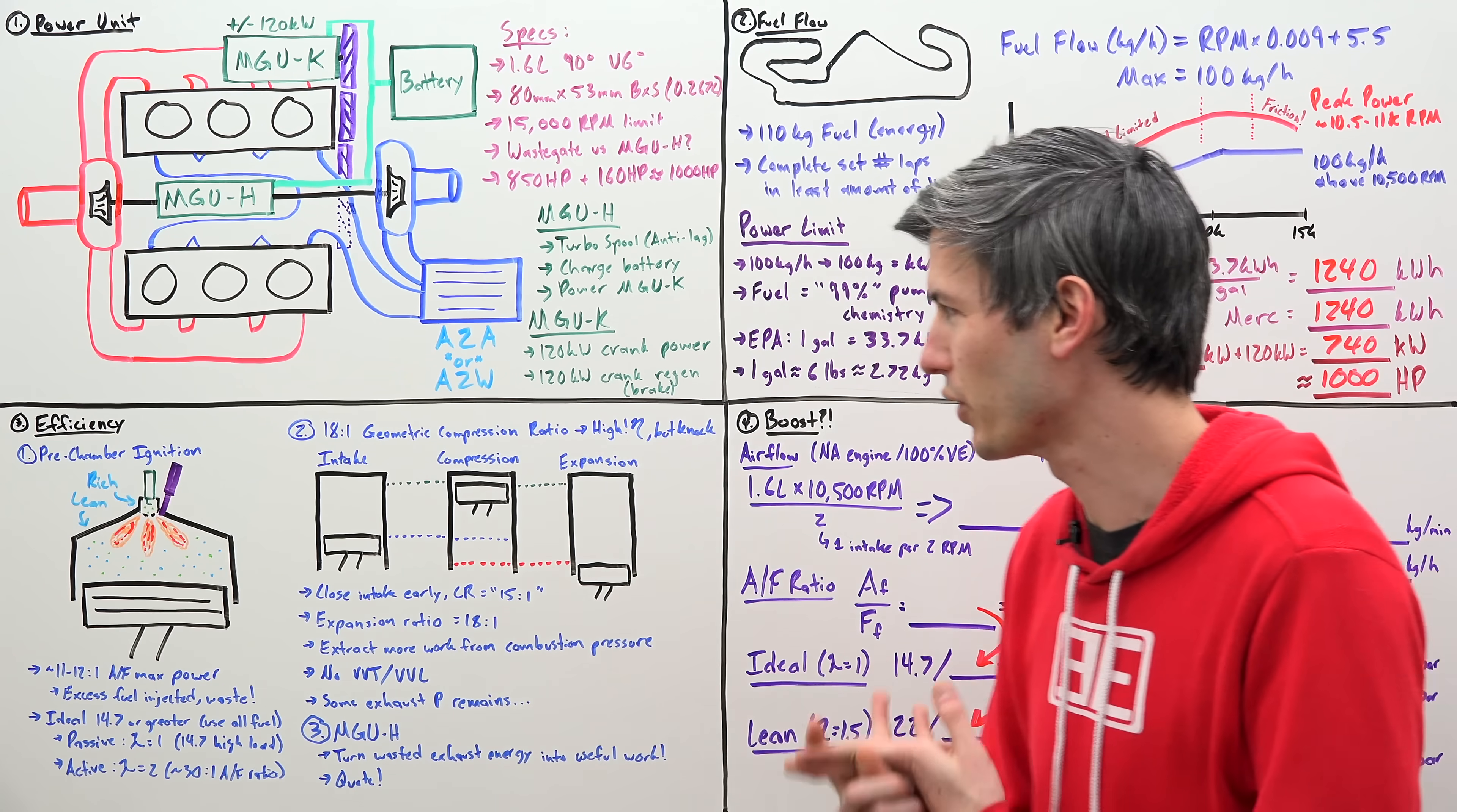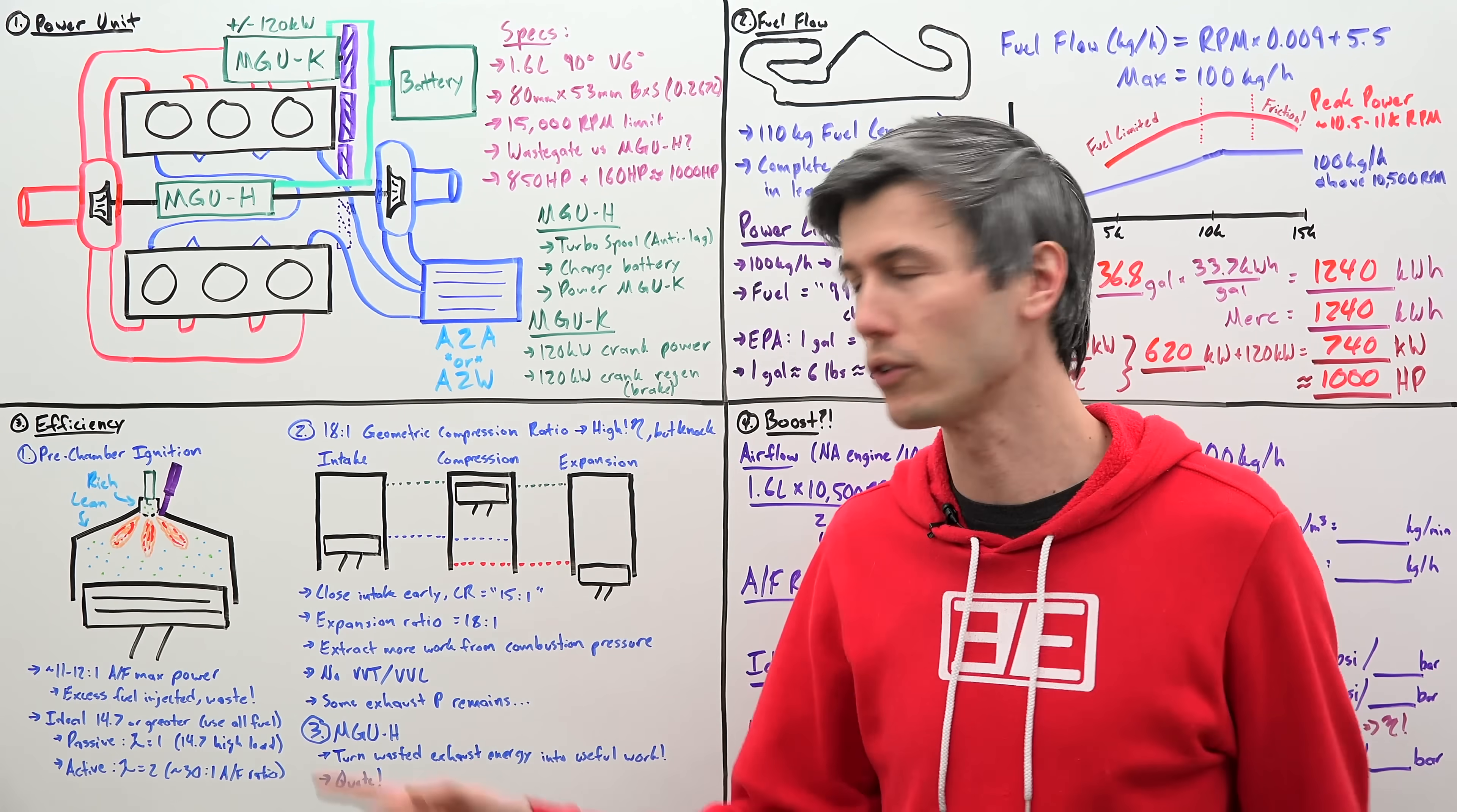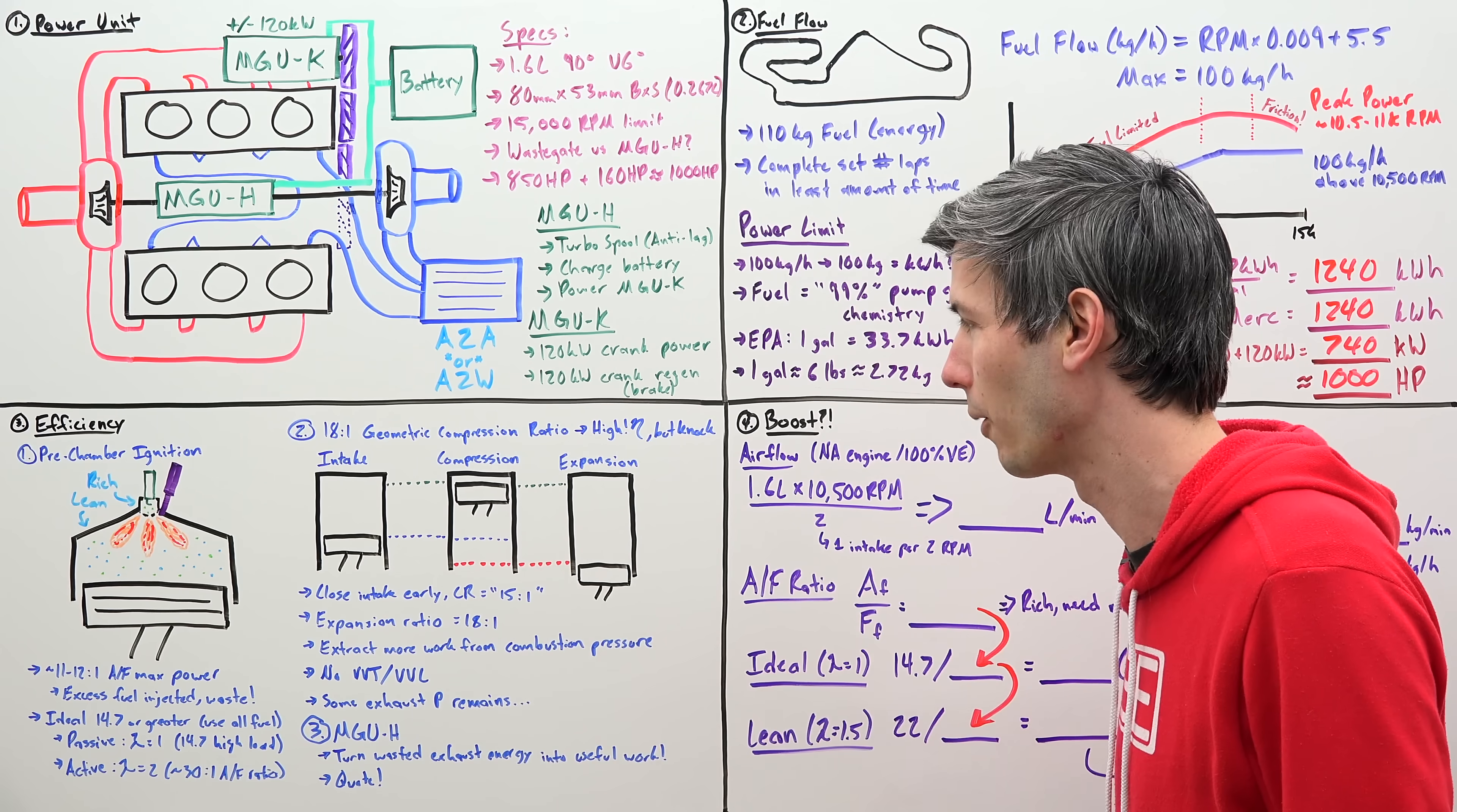Okay, the second part of efficiency for F1 engines, within the rules, it is stated that you are limited to a geometric compression ratio of 18 to 1. Now, we don't have production gasoline road cars using 18 to 1 compression ratios. It would be very efficient, the higher your compression ratio, the greater your efficiency, but what happens when you start to get in these really high compression ratios? Well, you run into knock, and it destroys your engine. But, you can have some clever tricks if this is your limit. So, I don't know what they actually do in Formula 1, I don't know what the compression ratios teams are using are, but here's just an example of what you can do with something like an 18 to 1 geometric compression ratio.